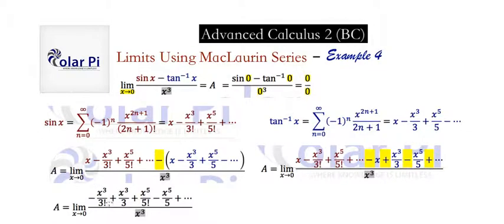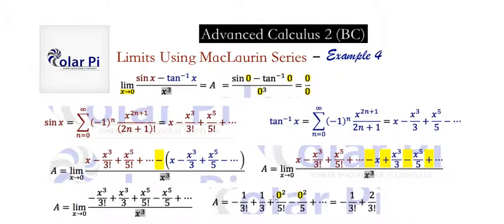Because once we divide our numerator, this infinite polynomial sum with some negative terms, once we divide it by x cubed, we're going to get this, which is to say that negative x cubed over three factorial divided by x cubed will become negative one over three factorial. And then plus x cubed over three divided by x cubed is going to become just one over three, and so on.